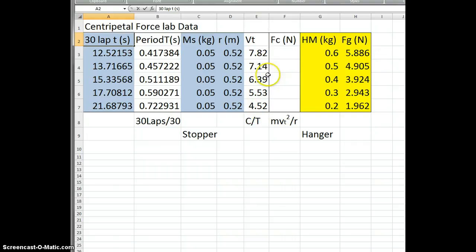Then, you've got Vt. We learned centripetal force is mass times Vt squared over R. So we're going to set that one up here as a formula. Equals, I'm going to use a parenthesis here, the stopper mass, because that's what's going in a circle, times Vt squared.